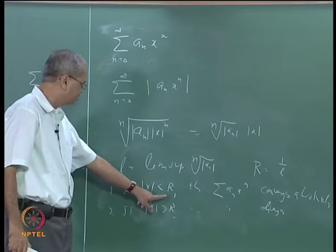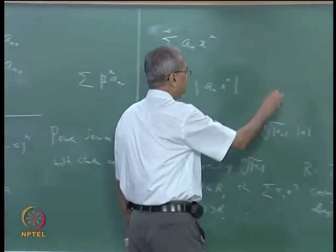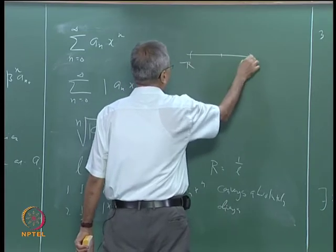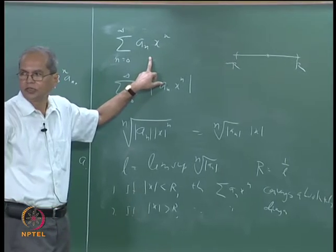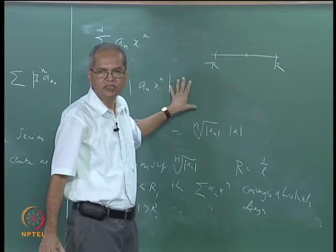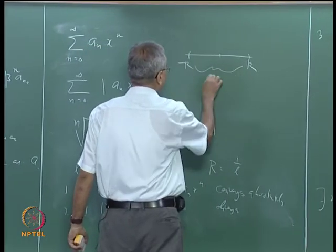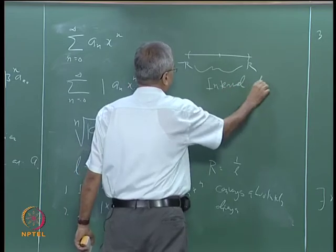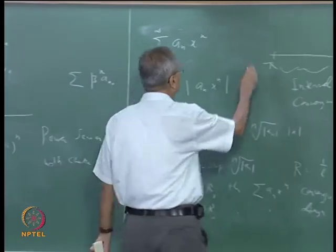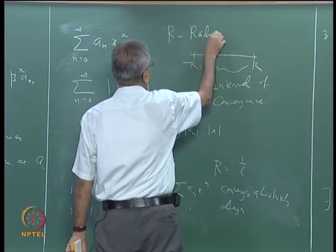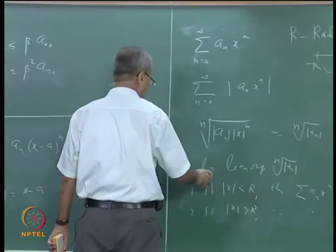When |x| < R, that means x lies in the interval (−R, R). Whenever x is inside this interval, the series sigma aₙxⁿ converges absolutely; whenever x is outside, it diverges. The endpoints must be tested independently. This interval (−R, R) is called the interval of convergence of the power series, and R is called the radius of convergence.